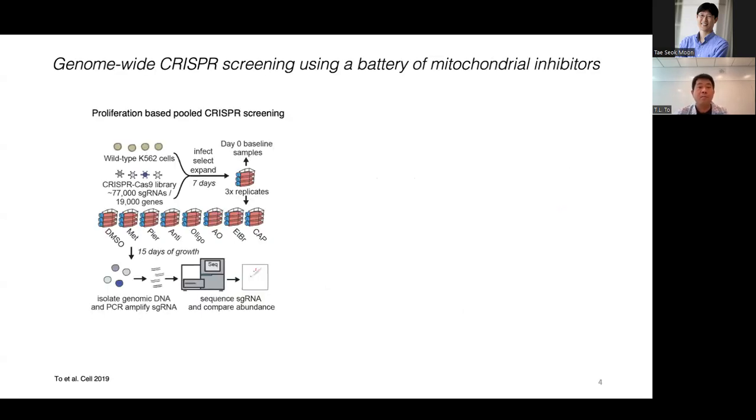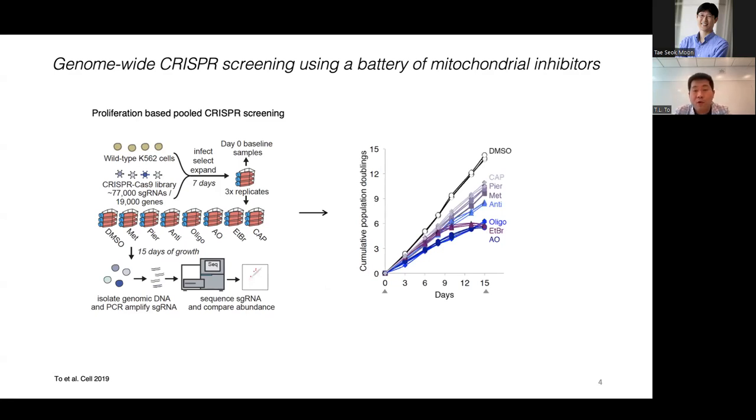So it turns out this OXPHOS system is really prone to be poisoned and they're very good specific inhibitors on different complexes. For complex one, there's piericidin and metformin for complex three, there's antimycin, complex five, oligomycin. And we can also completely collapse the membrane potential of the proton motive force using a combination of antimycin and oligomycin. And on top of that, we can also target the mitochondrial central dogma. We can block, deplete the mtDNA replication using ethidium bromide, as well as blocking the translation of mitochondrial protein using chloramphenicol. So we have this battery of mitochondrial drugs, and we can combine them with genome-wide CRISPR knockout library to systematically identify gene deletions that either reduce or enhance the fitness of the cells.